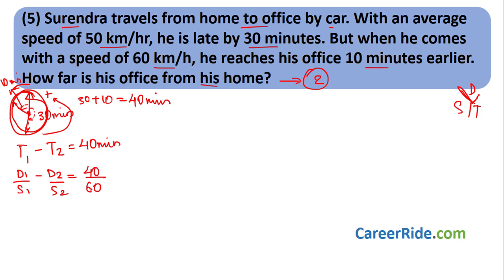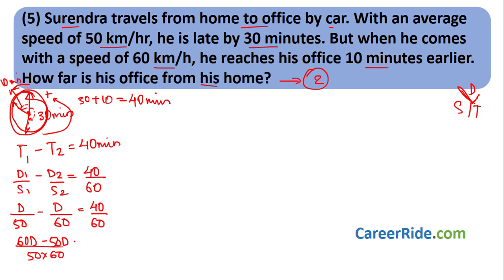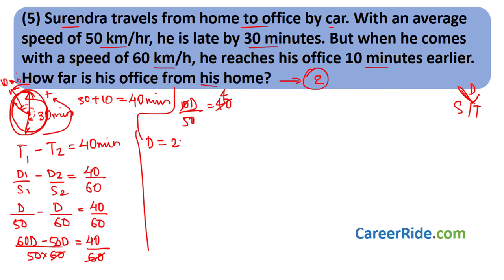The distance between Surendra's home and office is 200 kilometers using the fast method. Now for the regular method: distance is the same in both cases, so Speed₁ × Time₁ = Speed₂ × Time₂. Let X be the normal time in hours. At 50 km/h he takes (X + 30/60) hours; at 60 km/h he takes (X − 10/60) hours.